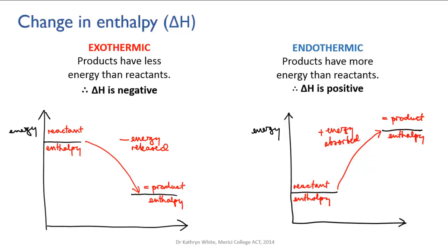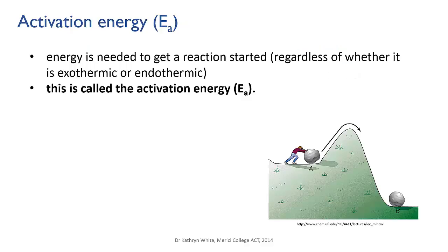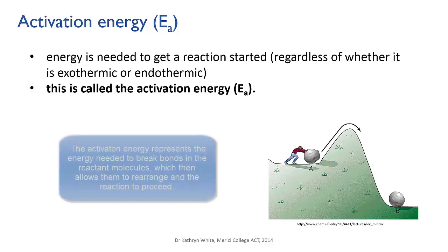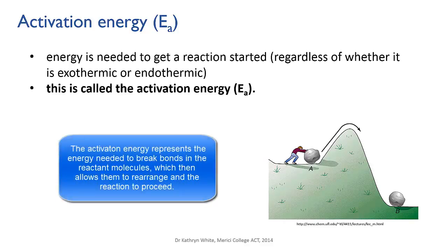We're beginning to develop a graph that shows how the energy changes during a reaction, but there's another important feature we haven't yet included — it's called the activation energy, with the symbol Ea. In all reactions, there's a certain amount of energy that needs to be added, regardless of whether the reaction is exothermic or endothermic, before the reaction can get started. The reason is that bonds in the reactant molecules usually need to be broken before the atoms can be rearranged to form the products, and breaking bonds requires energy.